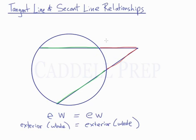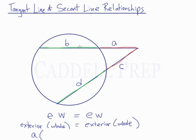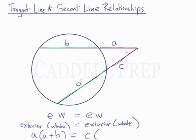If we give some measurements to these: the exterior part is A, the interior line segment is B, this exterior part here is C, and this interior line segment is D. So we have exterior times whole: the exterior part of this secant is A, and the whole length is A plus B. That equals the exterior of this secant, C, times its whole length, C plus D.